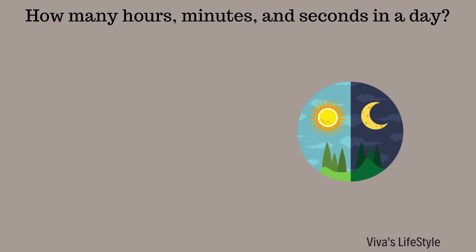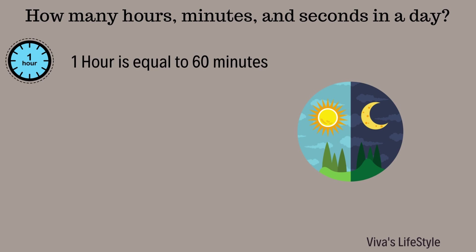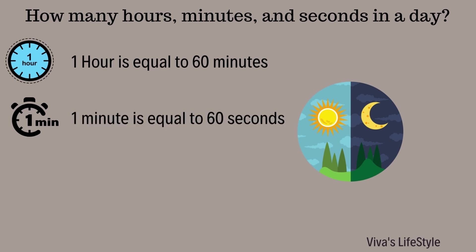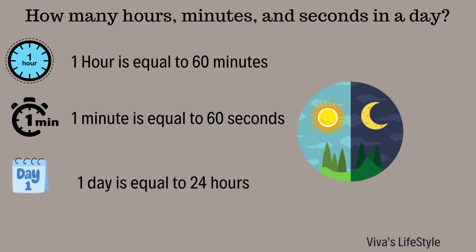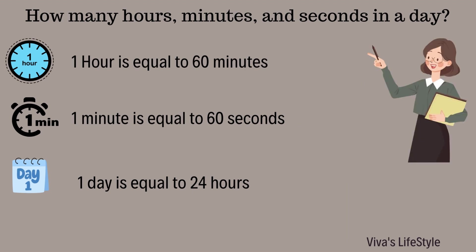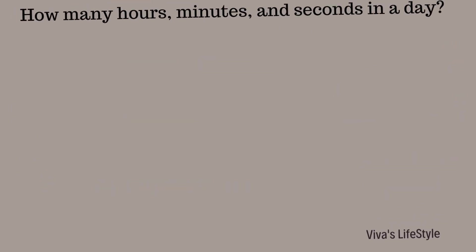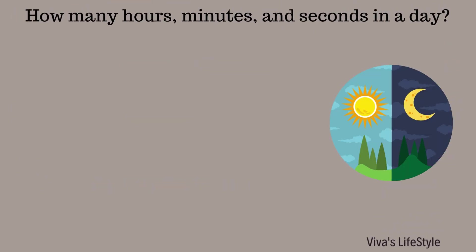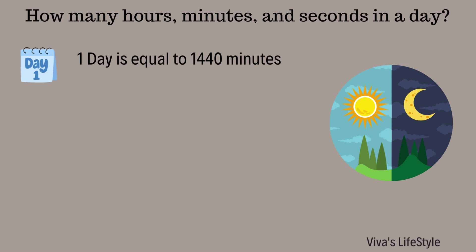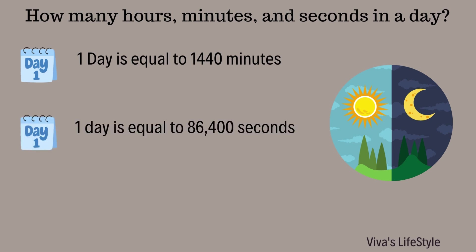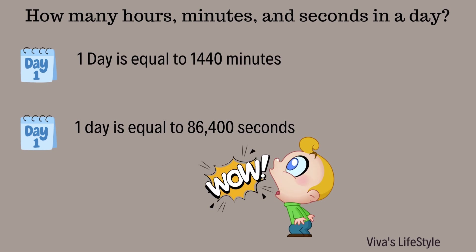Now let's learn about how many hours, minutes, and seconds in a day. One hour is equal to 60 minutes. One minute is equal to 60 seconds. One day is equal to 24 hours. Similarly, one day is equal to 1,440 minutes. And one day is equal to 86,400 seconds. Wow, it's interesting facts about time, isn't it, kids?